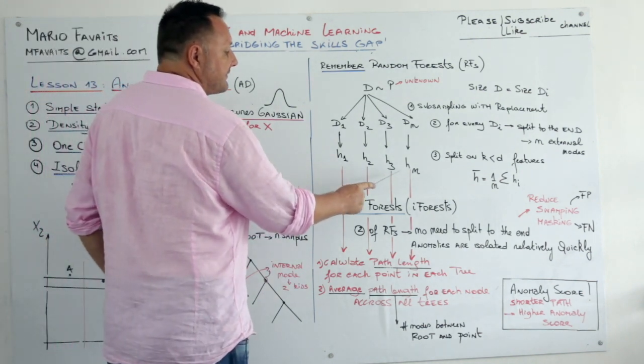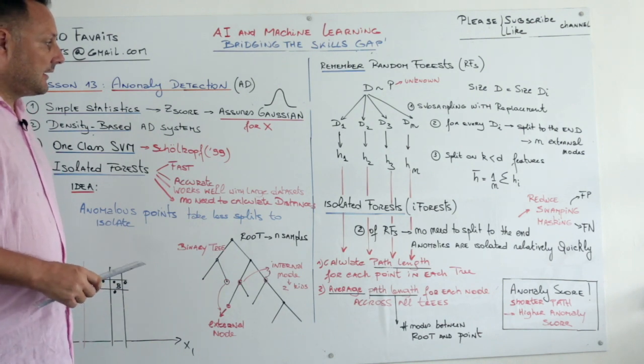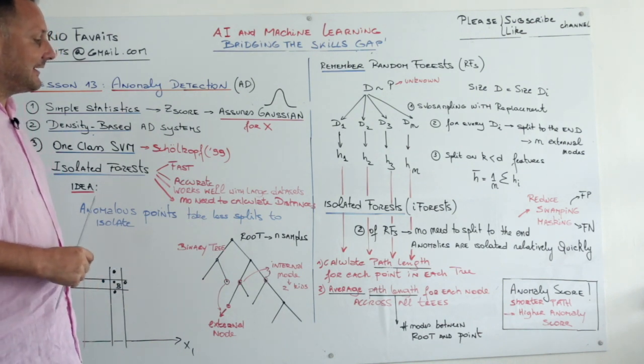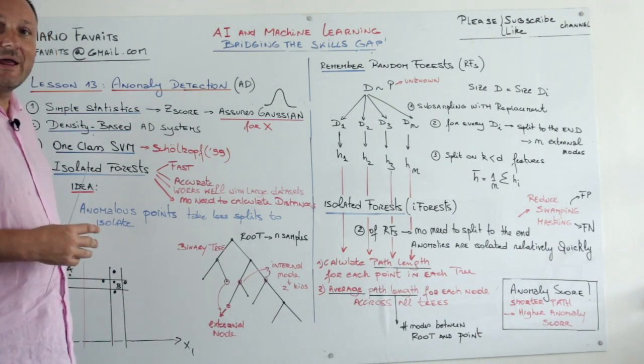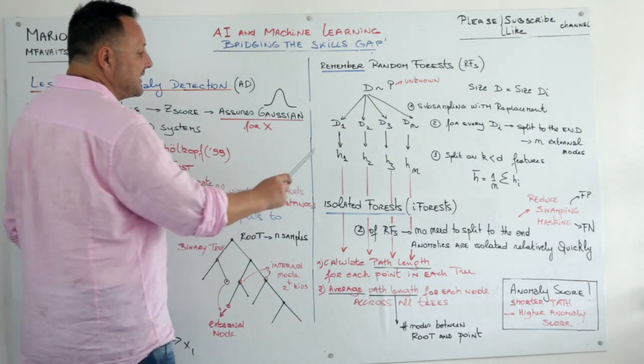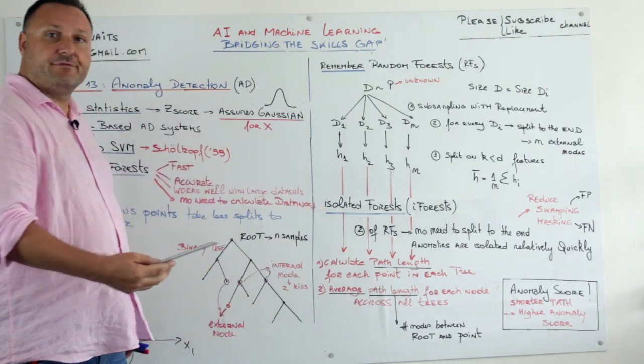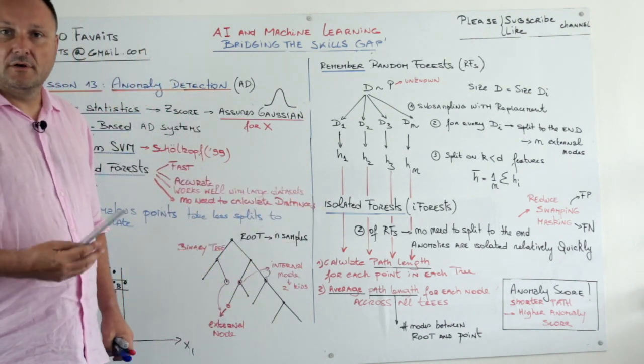And then the second thing is, when we have our classified, when we have our trees, the system is going to calculate the path lengths for every point in every tree. So you have tree number one. Your point A could be four splits, or four nodes.